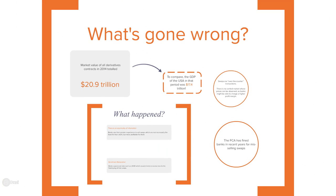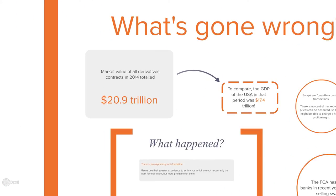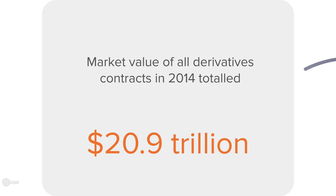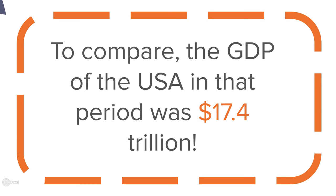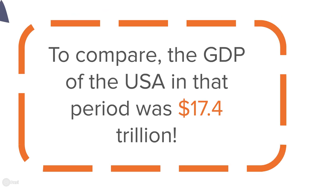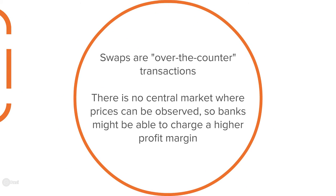Swaps are a large source of revenues for banks. For example, in 2014 the worldwide gross market value of derivative contracts was equal to $20.9 trillion — more than the GDP of the USA for the same period, which was $17.4 trillion. Also, swaps are so-called over-the-counter transactions, meaning there is no central marketplace like an exchange where prices can be easily observed. Instead, banks may be able to charge a higher profit margin given the opacity of the swap market.